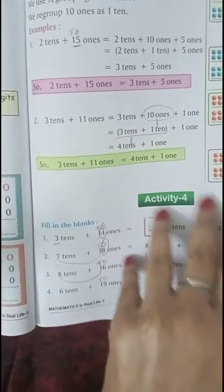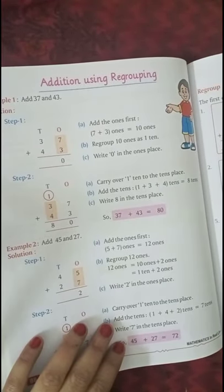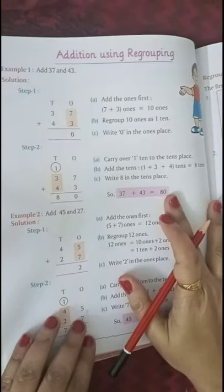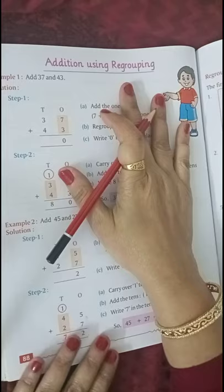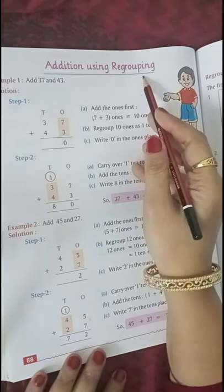I hope you will follow because you already have some idea about ones and tens. So next is page number 88. Regrouping, now you understood how to do regrouping. But we have to do addition using regrouping.